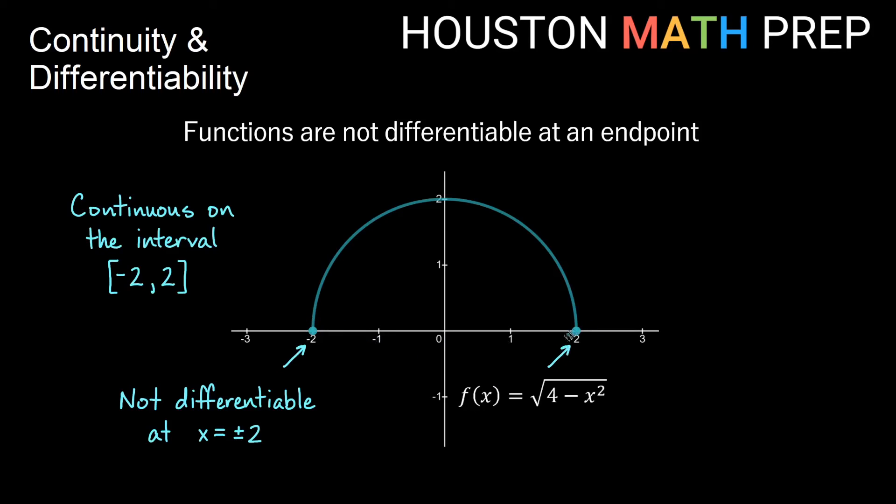But it's not differentiable at the endpoints. Okay, so at negative 2 or at positive 2, there are many, many different tangent lines I could draw. I could even draw a vertical tangent line. So not differentiable at the endpoints. So we make a note that this is really only differentiable inside of the open interval negative 2 to 2, not including the endpoints x equals 2 and x equals negative 2.